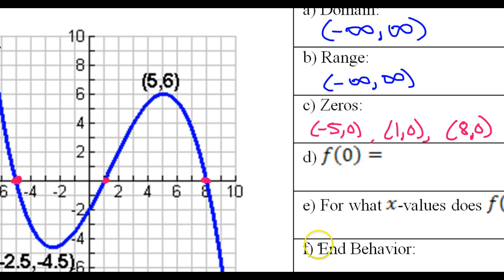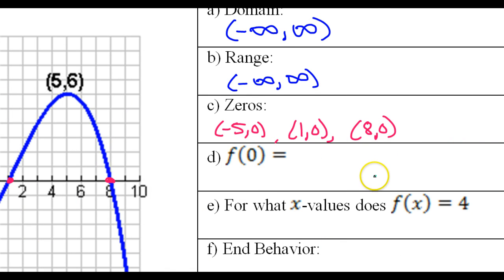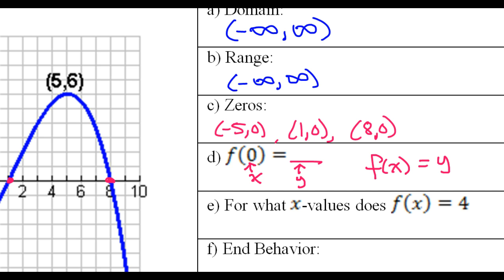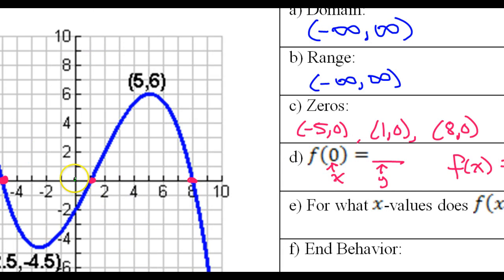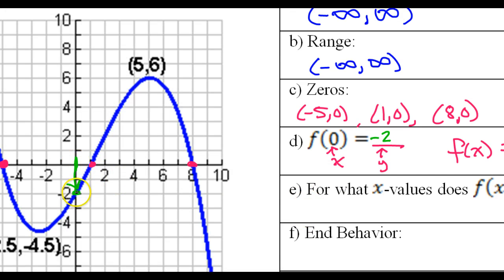Now, the value of the function at zero. In general, when you see function notation like this, it's in the form f of x equals y. Whatever's inside is an x value, and whatever's outside is a y value. So they're giving us the x value of 0 and asking what is the y value. Going to x equals 0 and looking at the function, I get a y value of negative 2. So f(0) equals negative 2.